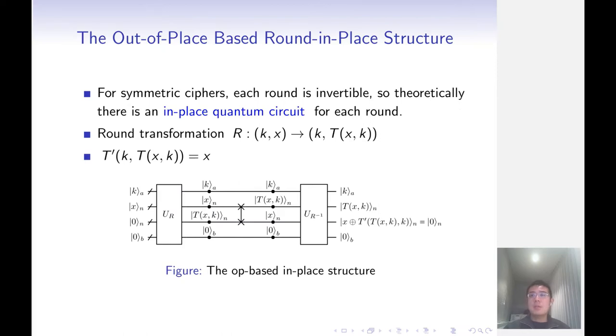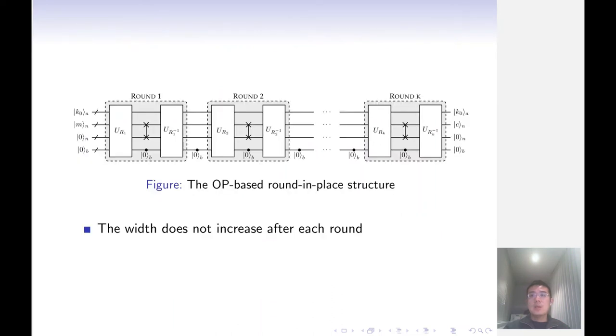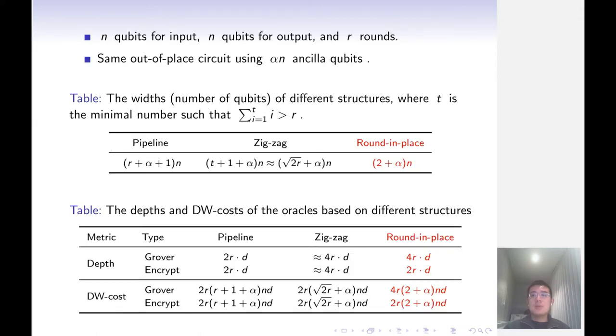Here, we present a method to construct an in-place round circuit from two out-of-place sub-circuits. By this structure, the width of the circuit will not increase after each round. Here is a comparison of our new structure with other ones.